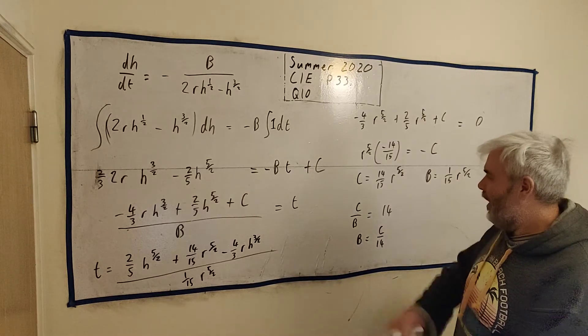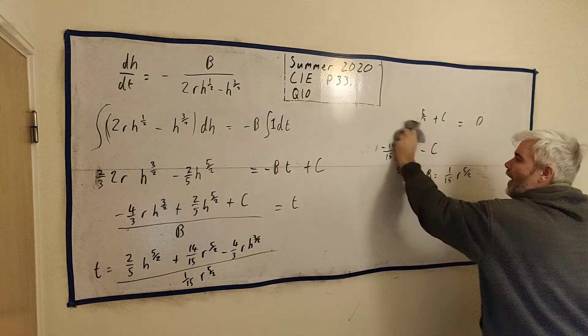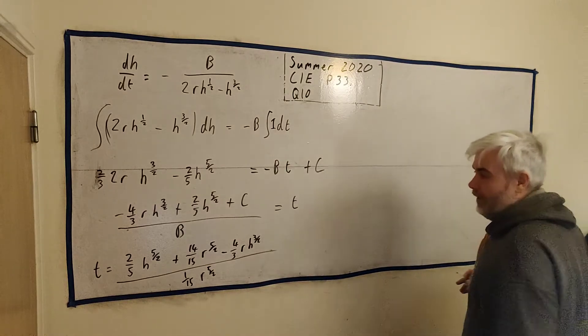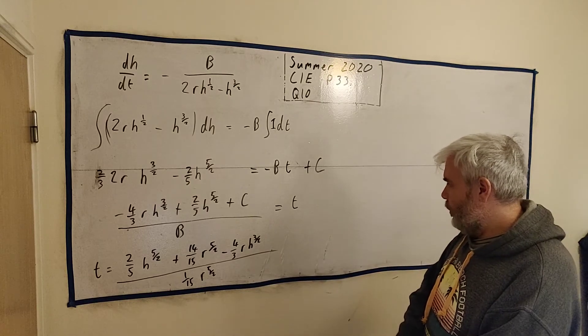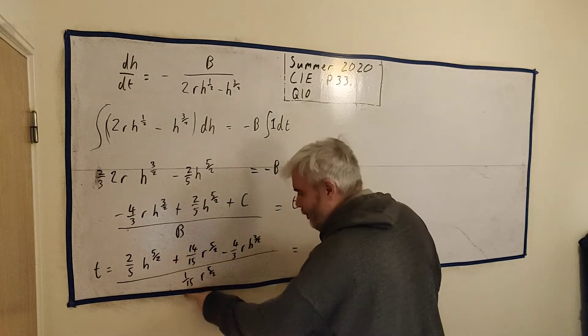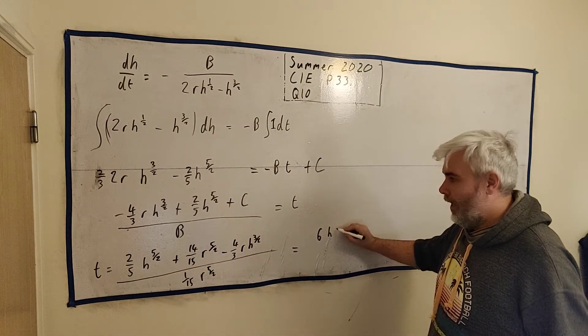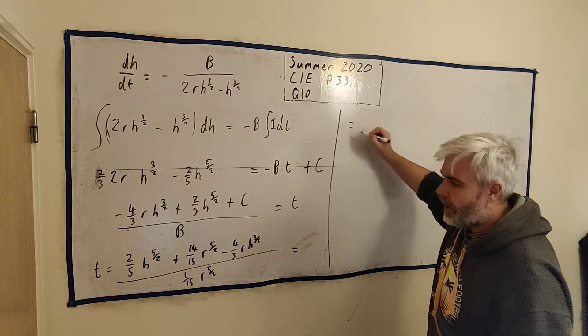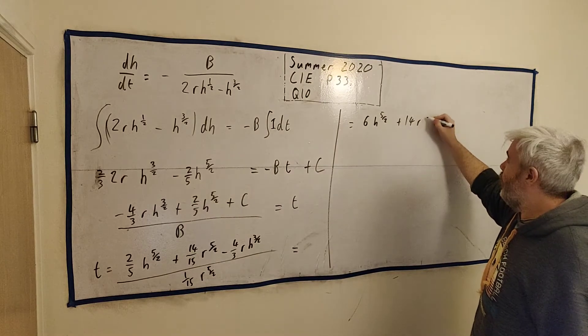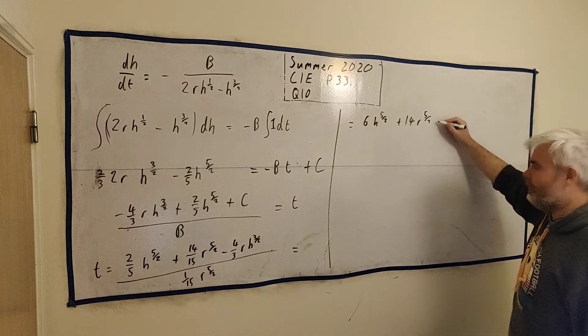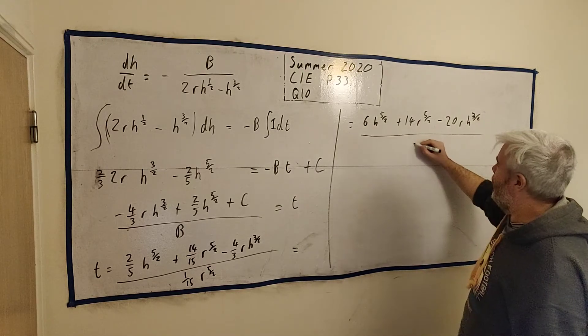The answer they give in the online answer section is a little different. So let's clean this up and see if we can make it look the same, but this is fine. There's some obvious ones we could make. We can multiply everything by 15 on the top and the bottom. If we multiply this by 15, it'd be like multiplying 2 by 3, we'll get 6 H 5/2. Multiply this by 15, we have 14 r 5/2. Multiply this by 15, we get minus 20 r H 3/2, all divided by r 5/2.